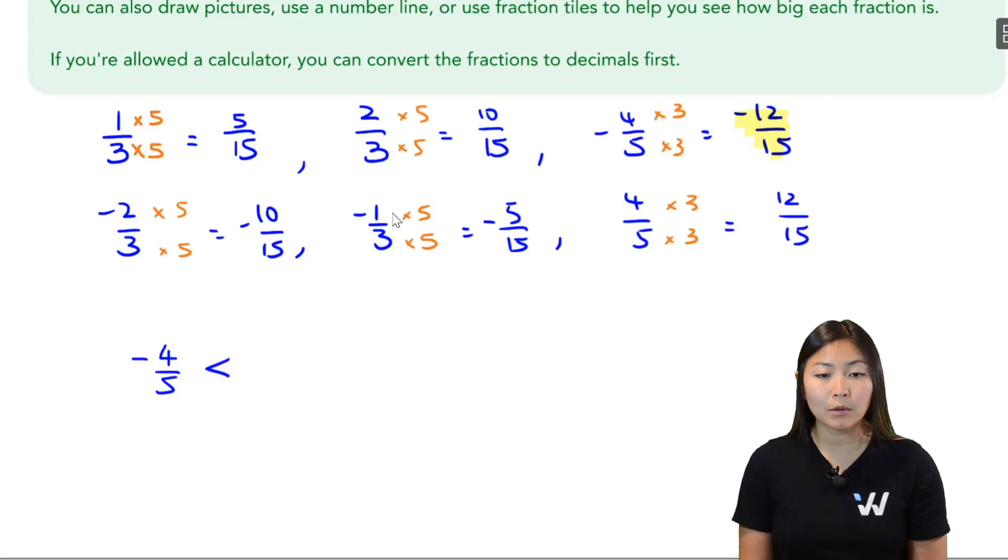Then in my list of negative numbers, it goes negative 10 out of 15, then negative 5 out of 15. So I'm going to write negative 2 thirds, the original fraction, and negative 1 third, the original fraction.